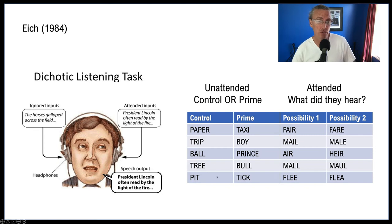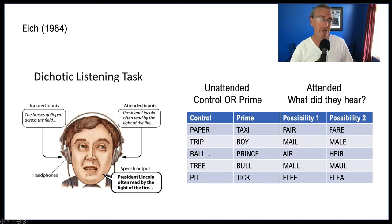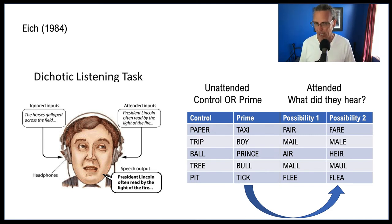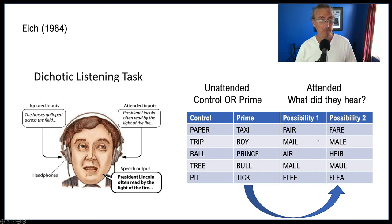Using the control items, we can establish the baseline likelihood of spelling the word a certain way — one spelling may simply be more common. Then critically, we look at the trials where the primes were in place. The simple question: when 'boy' is presented in the unattended ear at the same time they're hearing 'mail,' does that make them far more likely to write M-A-L-E when asked what they remembered?